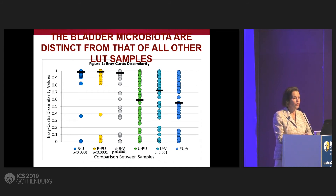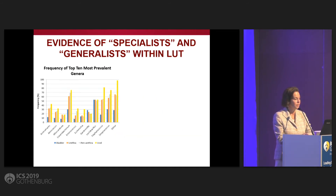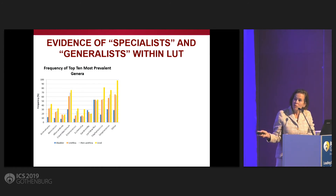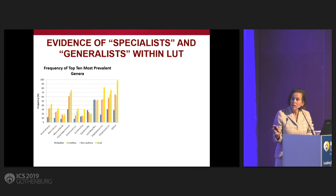This raises the question: should we even be using midstream voided urines? We had some evidence of what we call specialists versus generalists within the lower urinary tract — which microbes are able to reside in both niches. I'll draw your attention to this group, the A group: actinomyces, aerococcus, and alloscardovia. These are found fairly regularly in bladder specimens and very rarely, if ever, cultured in the standard urine culture. Actinomyces especially is known as an emerging pathogen, and without identification you will not be able to clinically resolve symptoms in patients who have this.